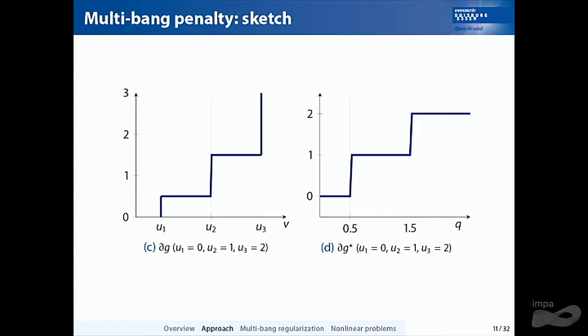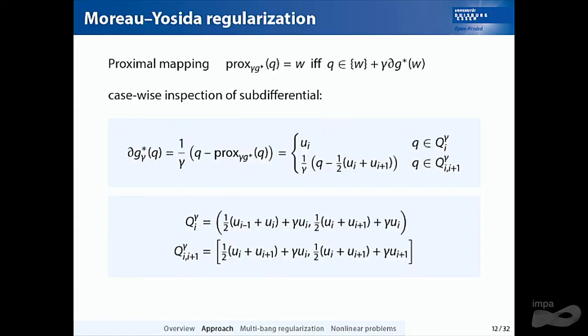The Moreau-Yosida smoothing handles the set-valued part at the kinks by replacing the set-valued jump at each desired value with a linear function of slope 1/γ on a slightly smaller interval. As γ → 0, these slopes become steeper and steeper, recovering the set-valued case in the limit. This regularized mapping — plugged into the optimality conditions — is Newton differentiable, enabling the Newton method.